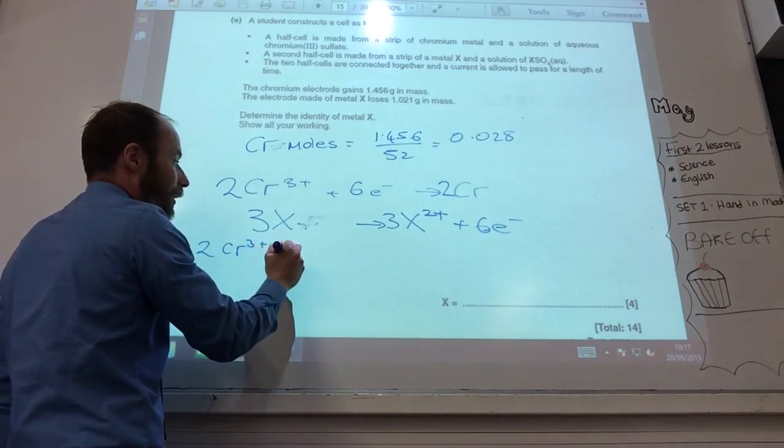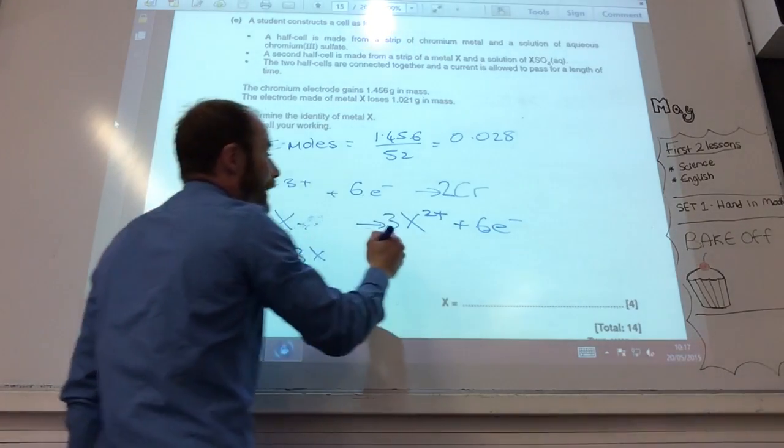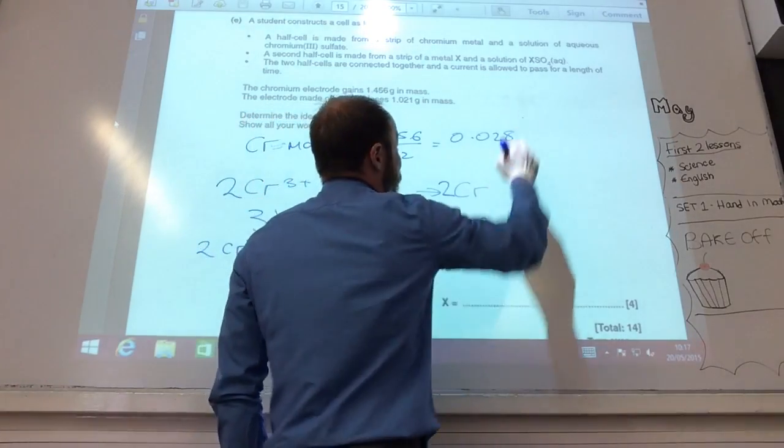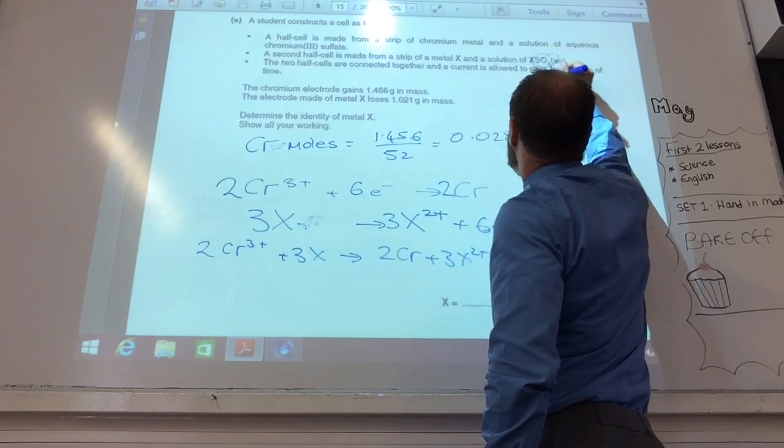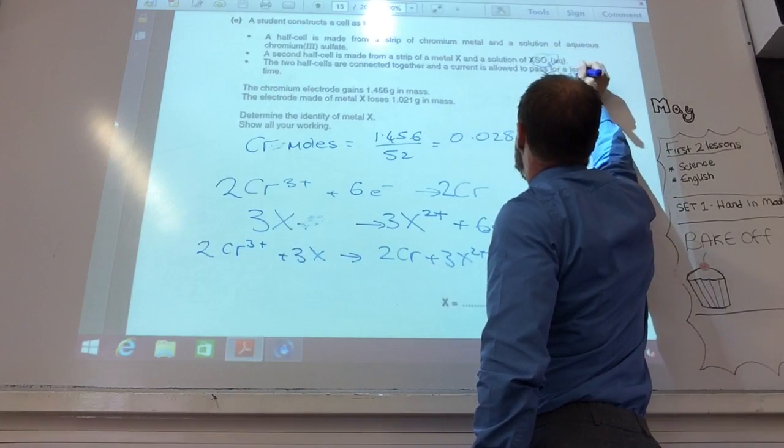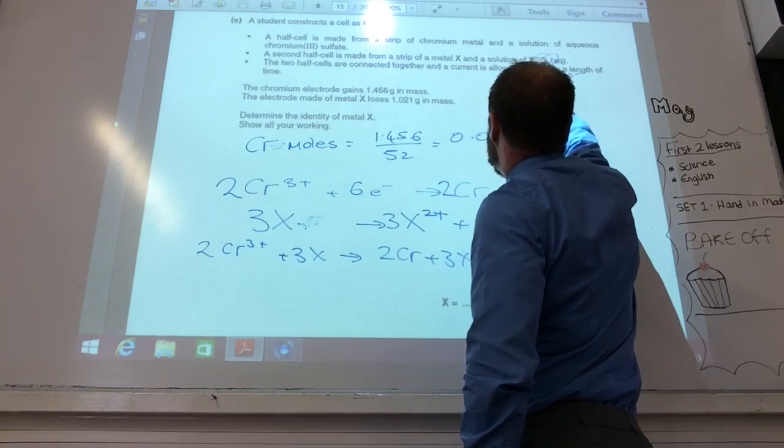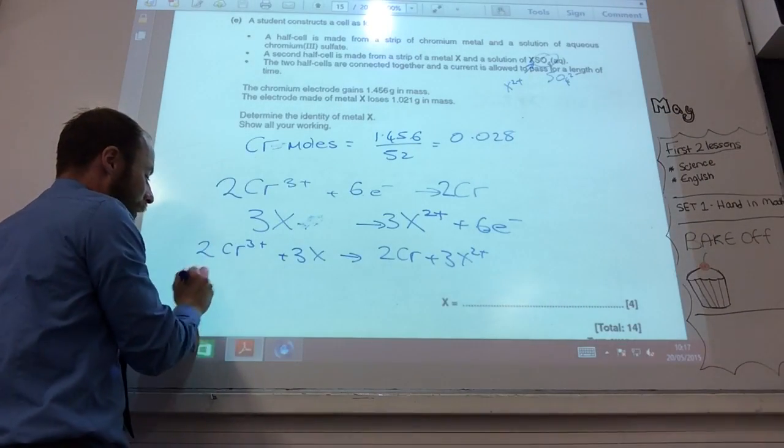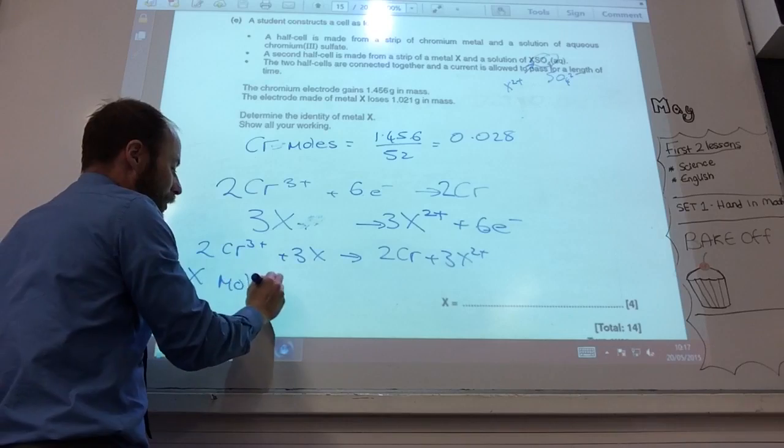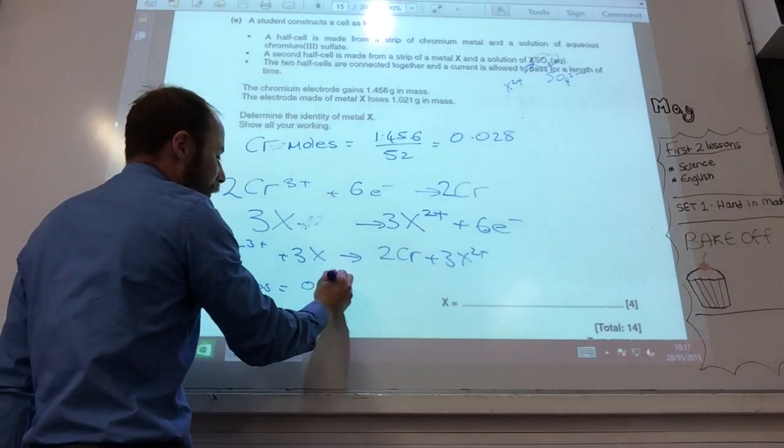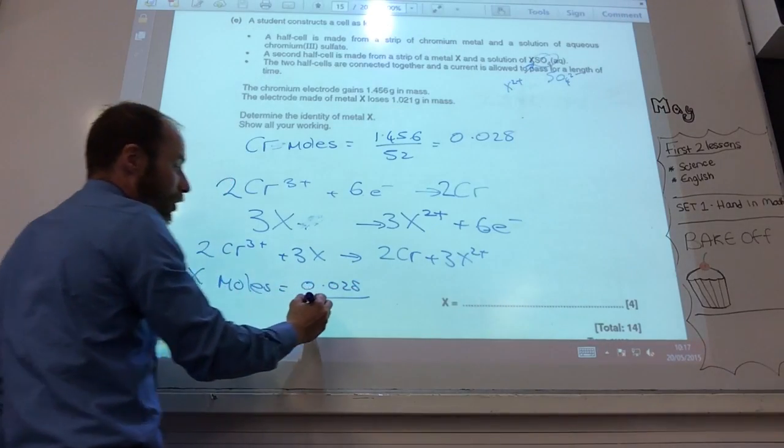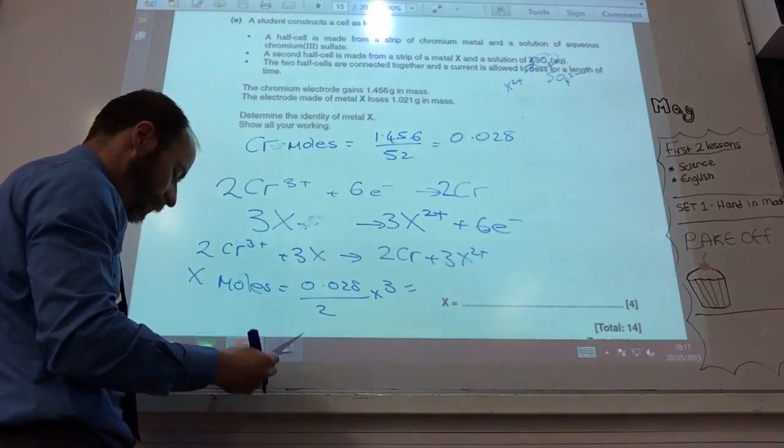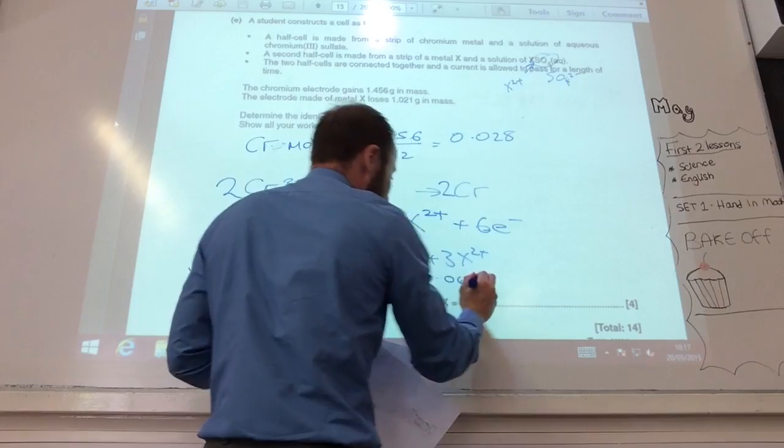How do you know that it becomes 2-? Because I formed X, and I know the charge on the sulfate is SO4 2-, and therefore X must be X2+. If that was my moles of chromium, X moles is going to be that number, divided by 2, times by 3, which gives me 0.042.